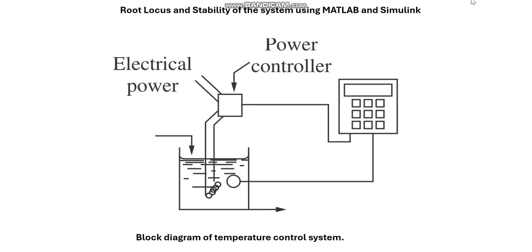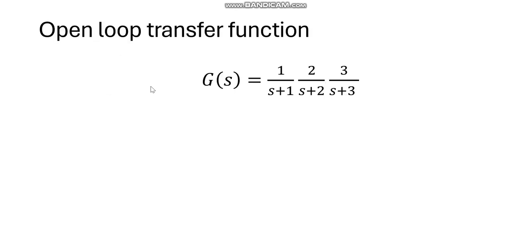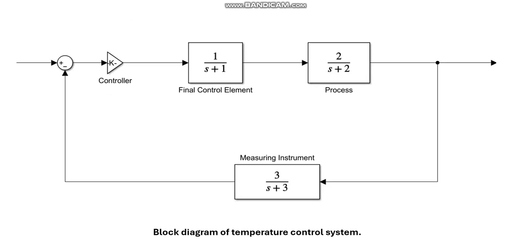This is the block diagram of the system. The controller sends a signal to the final control element, then it feeds into the process, and from the process the measuring instrument feeds back to the comparator. The transfer functions of the final control element, the process, and the measuring instrument are given. We are using a proportional controller, so the open-loop transfer function G(s) is equal to 1/(s+1) times 2/(s+2) times 3/(s+3).